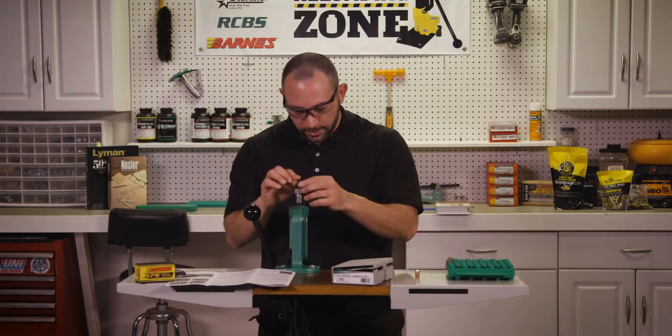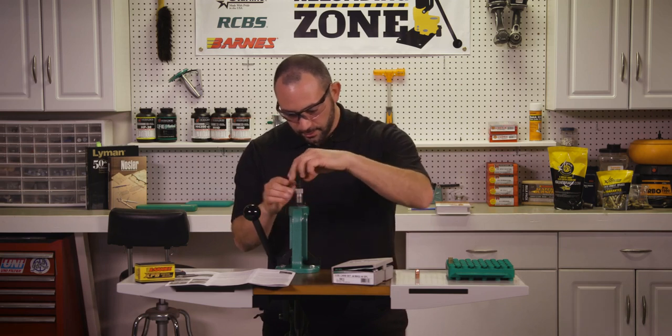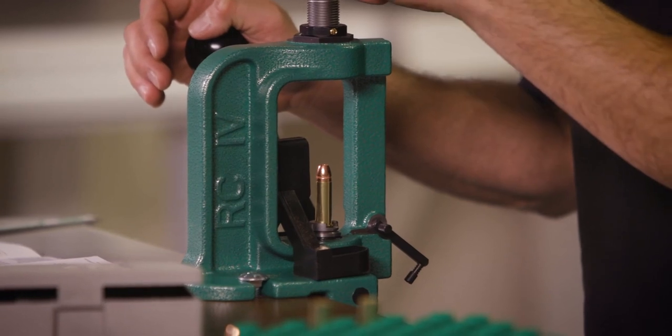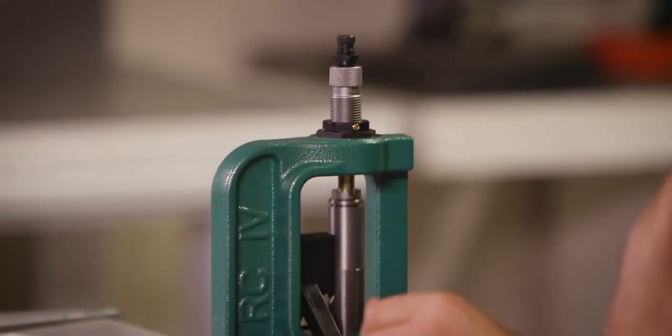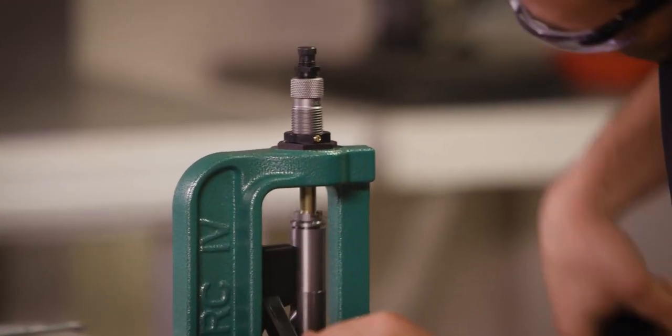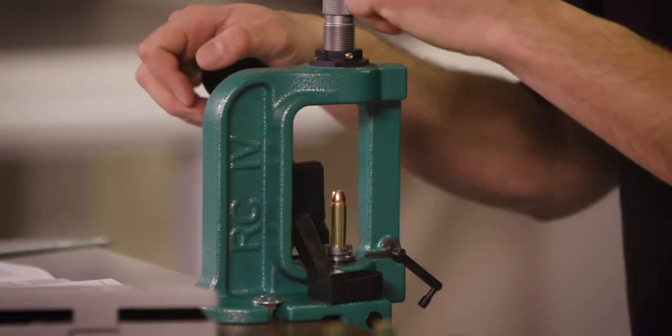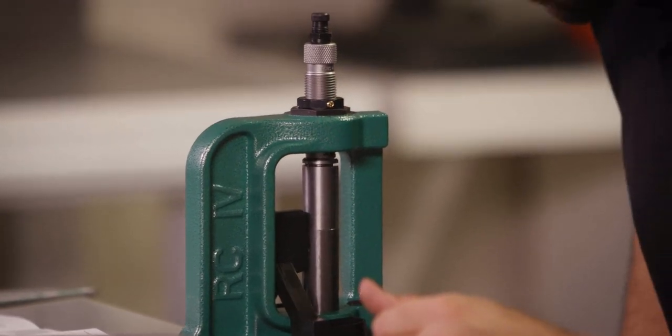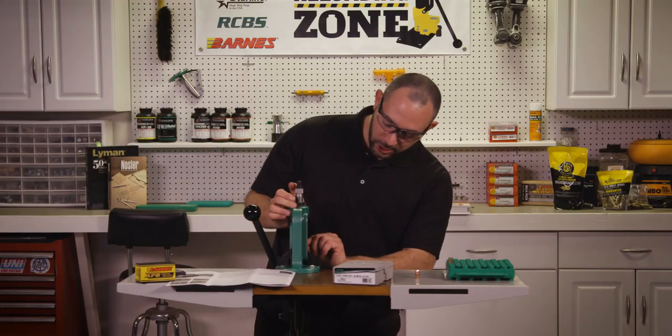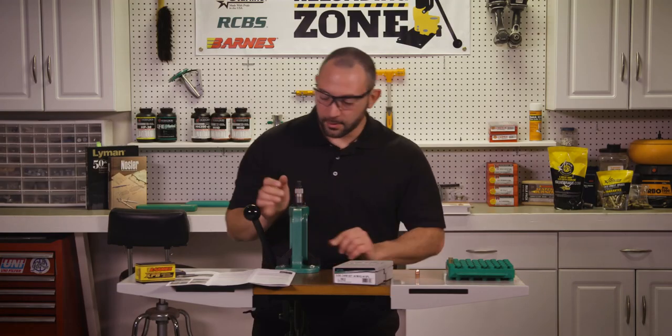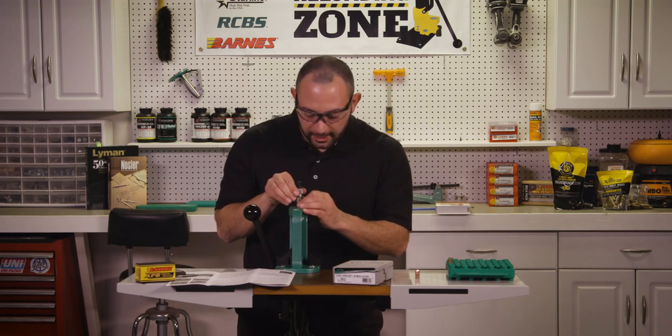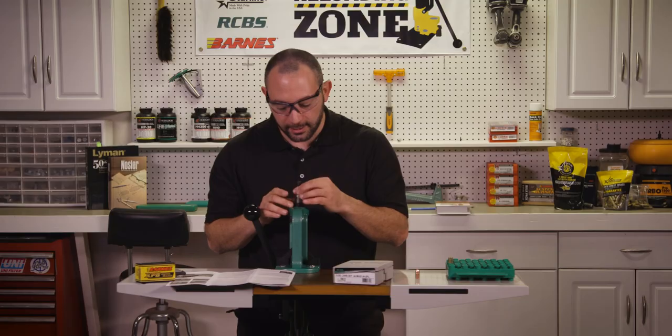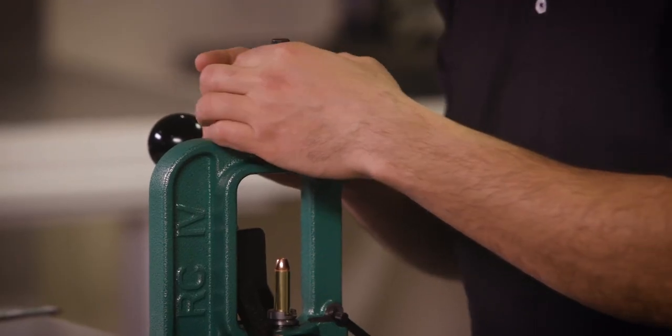Let's go ahead and make that adjustment. We can go quite a bit more. Now we're going to start minimizing our increments. And we're almost at the cannula at this point. Maybe another half a turn or so. Now that we've entered the crimping cannula and we're very close to where we want our overall length to be, we're going to loosen that lock ring. And we're going to put that one turn back on the die.